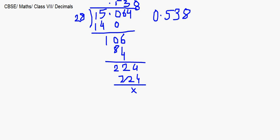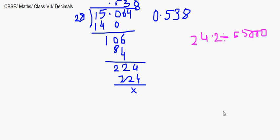Now let's divide a smaller decimal by a larger whole number. Take 24.2 divided by 55,000. To simplify, ignore the three zeros first and just divide 24.2 by 55. This shortcut reduces the size of the problem.